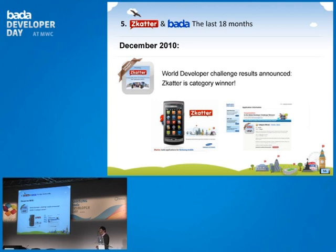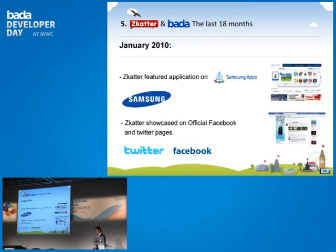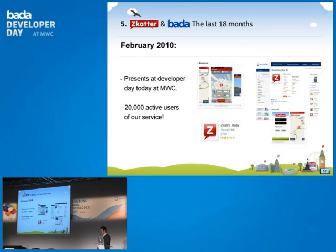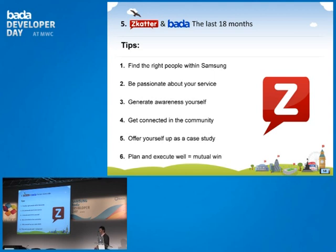The results of the challenge were announced in December. We managed to become a category winner, got featured on Facebook, Twitter, and Samsung apps. And here we are today at Mobile World Congress with 20,000 active users of our service. There's no reason why anybody can't do exactly the same. A few tips: find the right people within Samsung — it's very important. Be passionate about your service. Try and generate awareness yourself — don't just expect that you'll launch the app and loads of people will download it. You can be very resourceful with social media. Get connected within the development community, and offer yourself up as a case study.